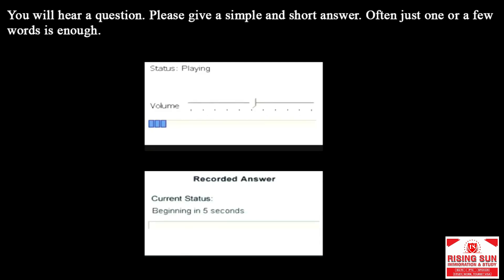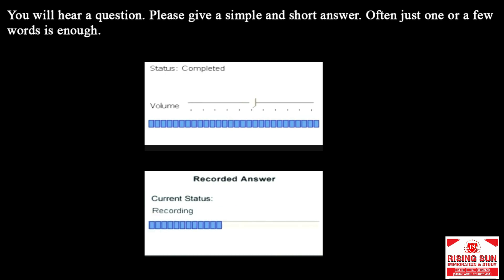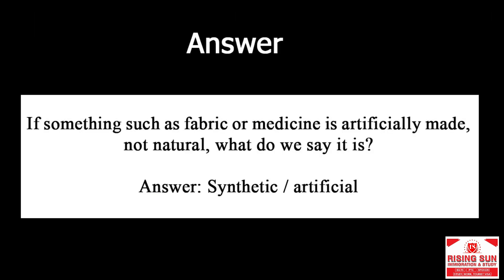If something such as fabric or medicine is artificially made, not natural, what do we say it is? Answer: synthetic, artificial.